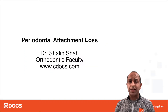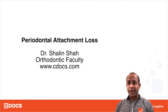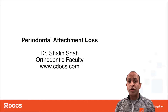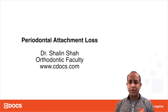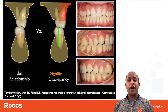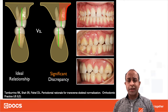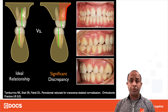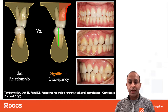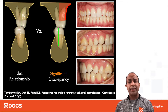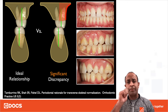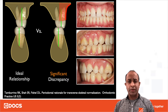Not all periodontal attachment loss is created the same. Of course, we know that if there is the presence of periodontal pathogens, we certainly have a higher risk for our patients to have attachment loss by way of recession and underlying bone resorption. However, that's not always the case. If somebody has a clean mouth, it's not just hard brushing that potentially gets them to have that attachment loss.